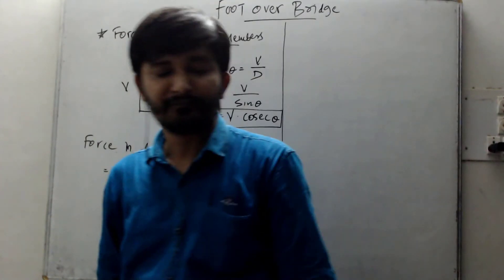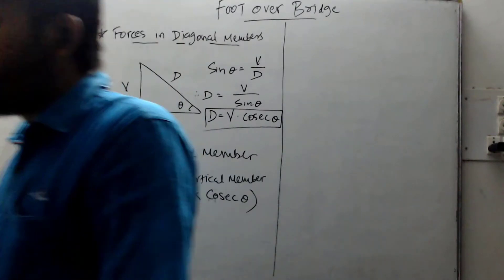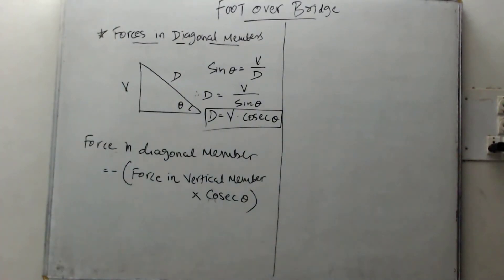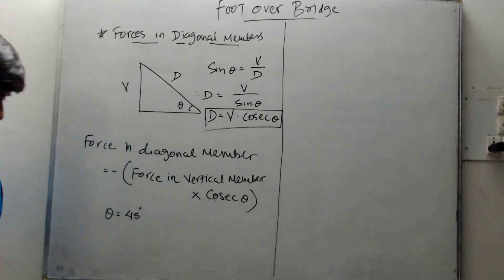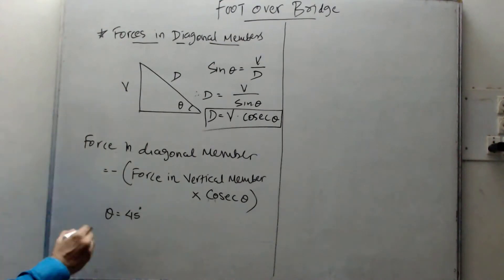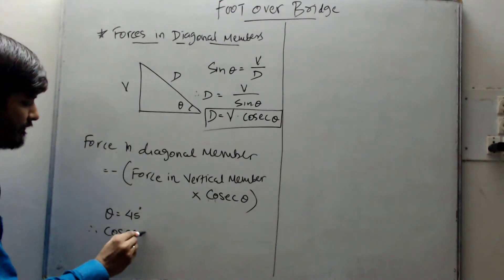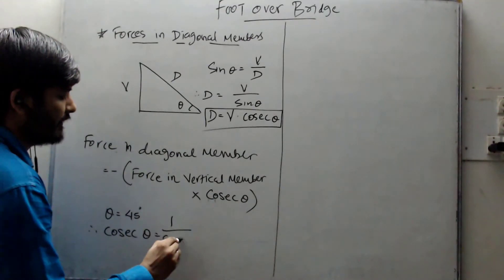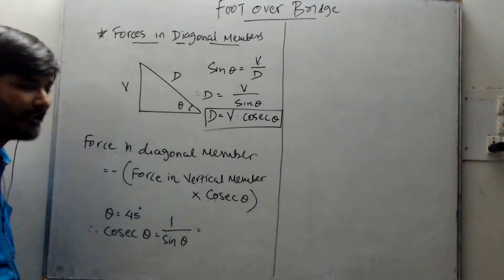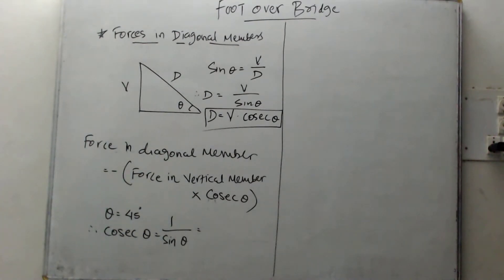In this problem, theta equals 45 degrees, because the height is 3 meters and the length is also 3 meters. Therefore cosec theta equals 1 divided by sine 45, which gives 1.414. So cosec 45 = 1.414.